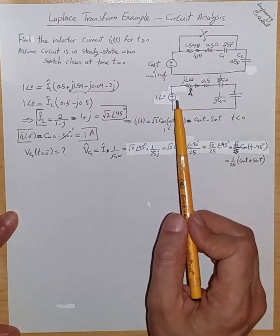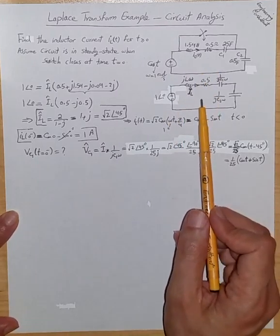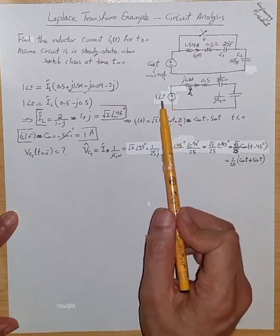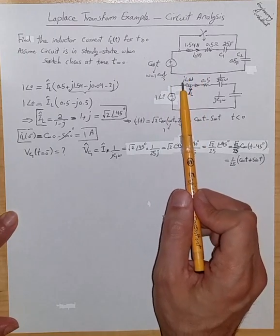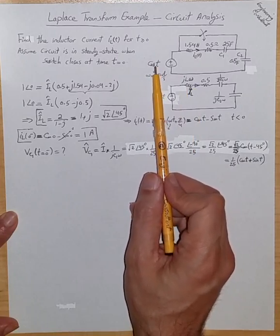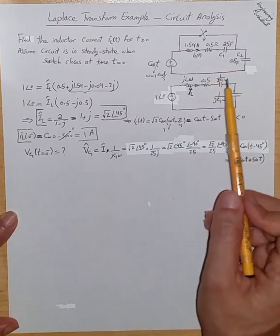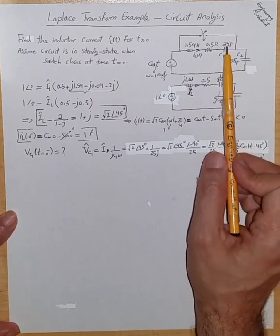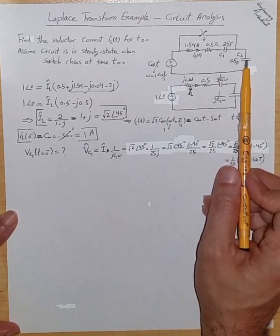The sinusoidal steady state equivalent circuit for this problem has the cosine t input voltage represented by a phasor with amplitude 1 and phase 0. The inductor is an impedance with value jLω, where ω = 1 radian per second as given — it is cos(ωt) where ω = 1. The resistor is 0.5 ohm. Capacitor C1 has impedance 1/(jC1ω), where C1 = 25 farads and ω = 1 radian per second. Similarly, 1/(jC2ω) represents C2.